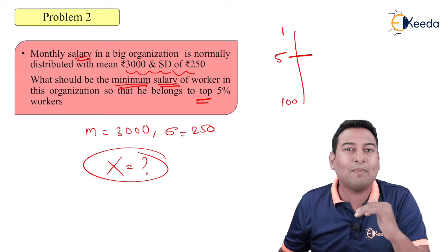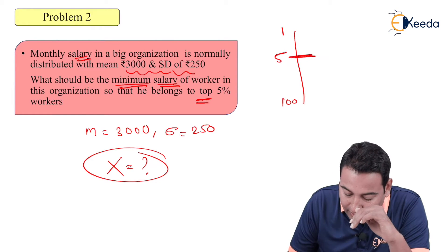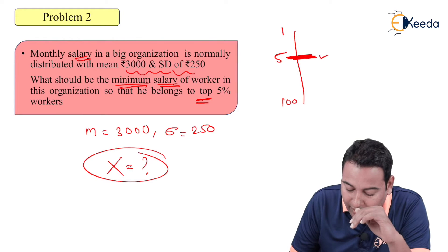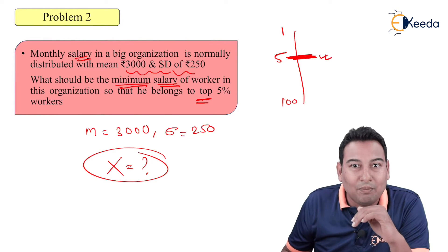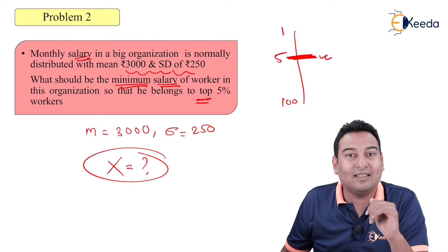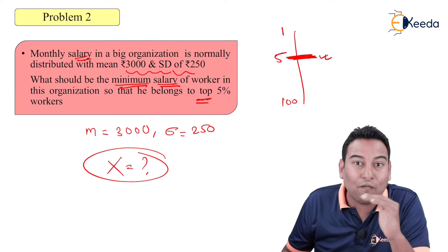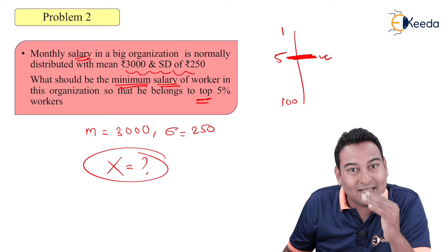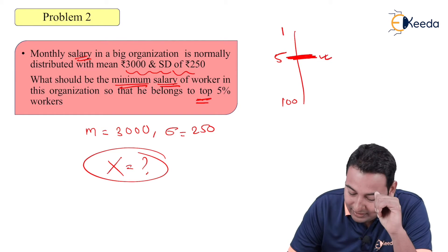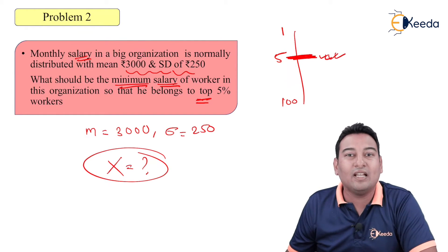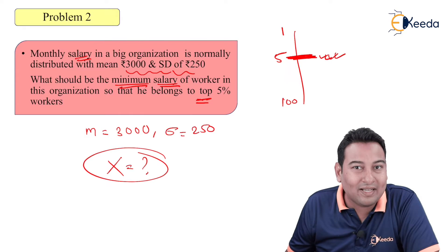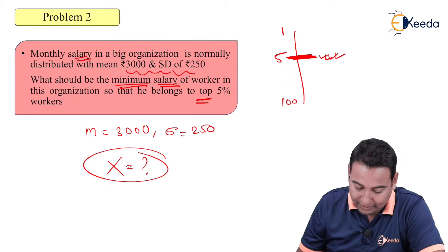Minimum salary of top 5%, still they are talking about more salary. Top 5%, top 5% minimum salary. Basically they are talking about this person. Therefore it's actually big salary, more salary. We need to check from this particular side.